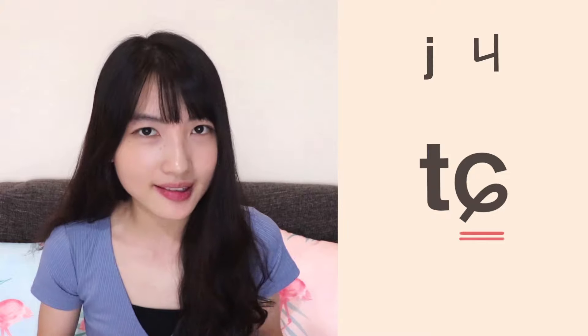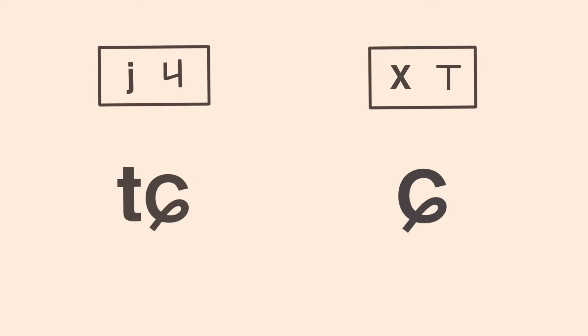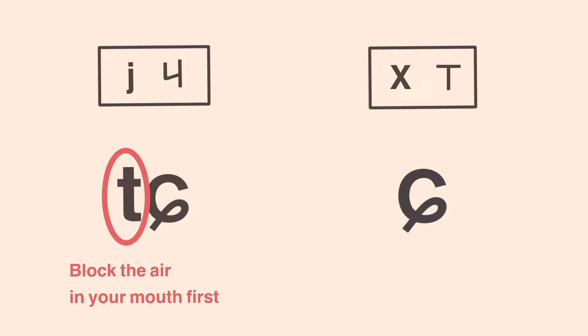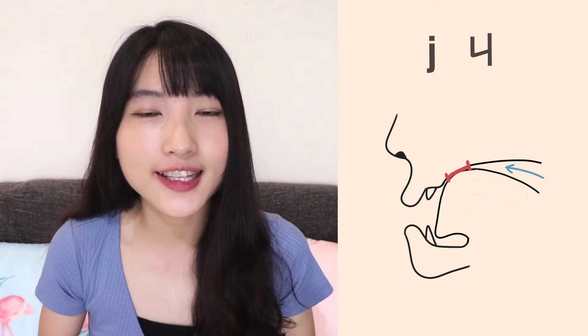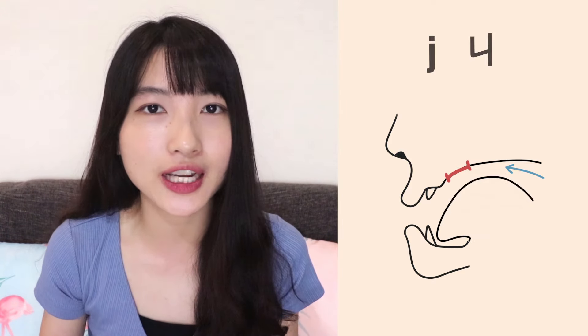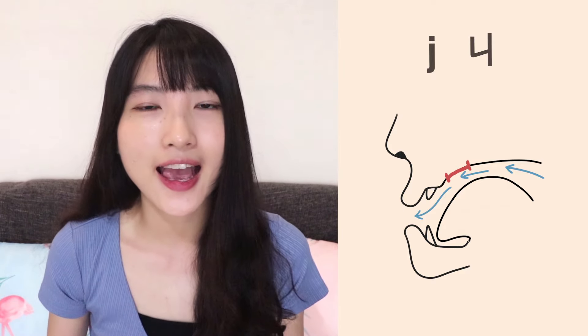The next sound is 'j' (鸡). The IPA of 'j' is this symbol — you can now recognize it — which means 'j' and 'x' both have the same tongue position. So when you want to make the 'j' sound, put your tongue in the same position as 'x', like the picture shows, and your lips should also spread wide. The difference between 'j' and 'x' is that 'j' has an extra symbol T in the IPA, meaning you need to block the air in your mouth first. Let the front part of your tongue stick to that position to block the air, then let your tongue go down a bit and let the air out to say 'j'. Let's practice together.